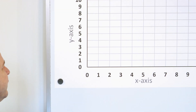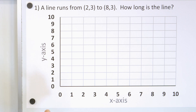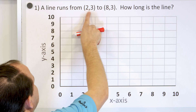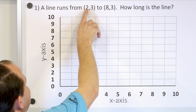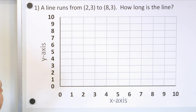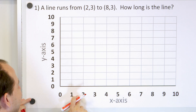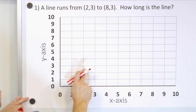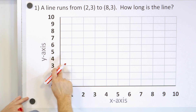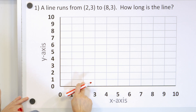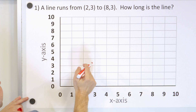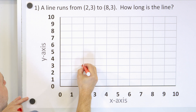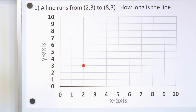The first point is 2,3. So how do we plot that? X is 2, Y is 3. So we go to X is 2 and Y is 1, 2, 3. Always X, Y, remember? 2 is first and 3 is second. So it's 2,3, and there is one end of the line.